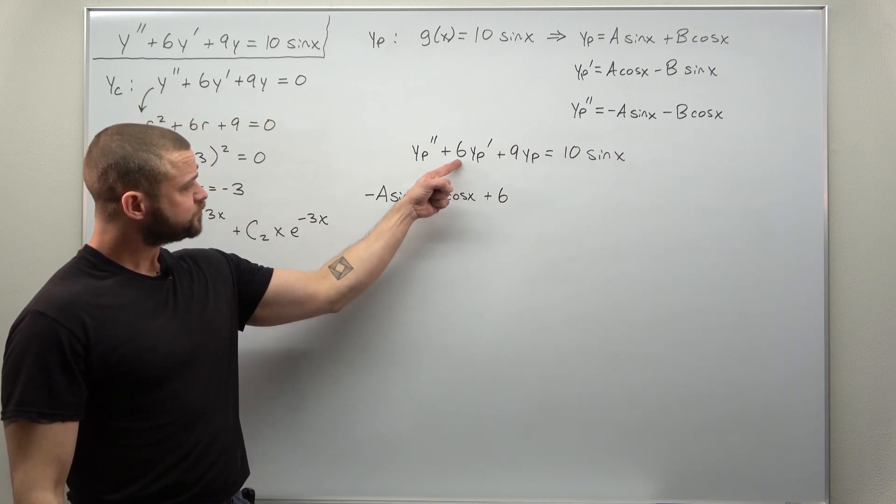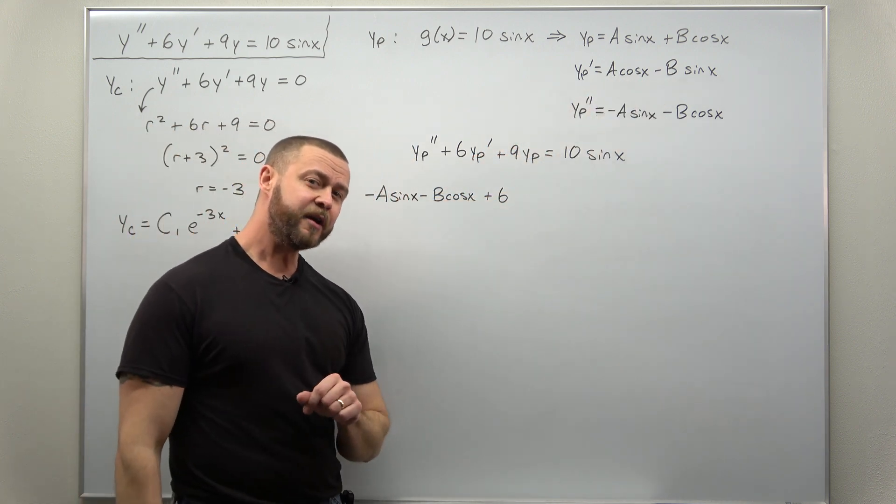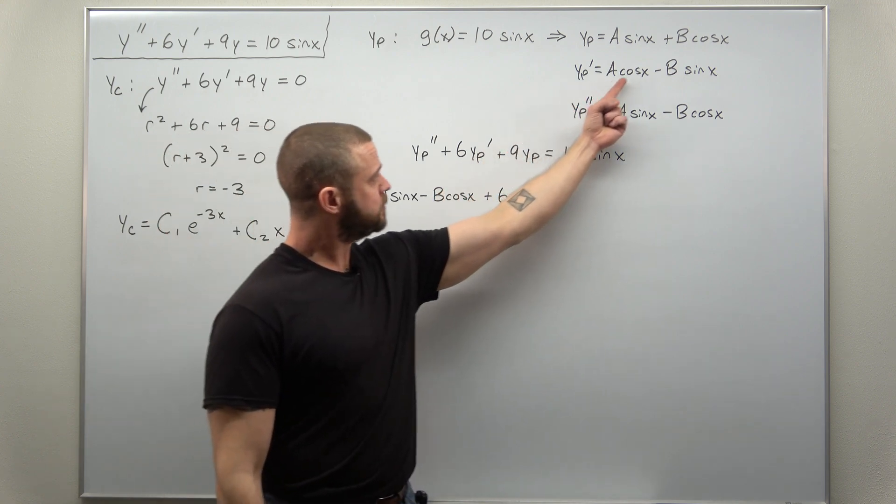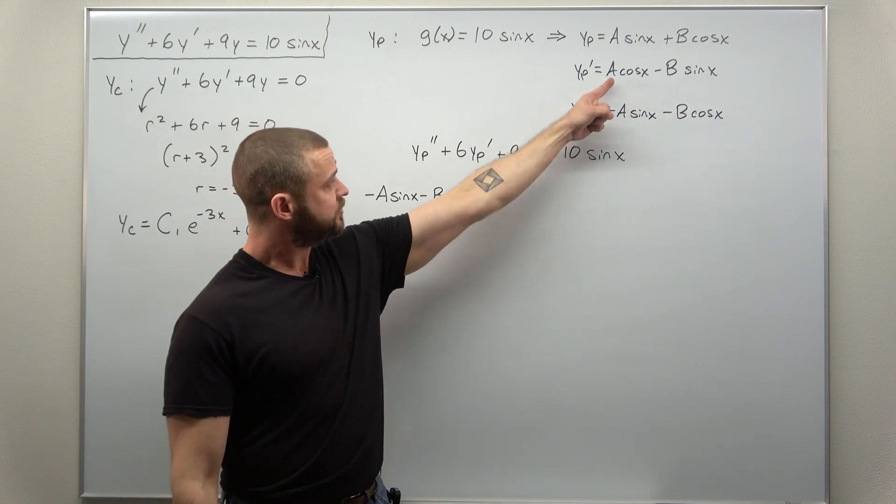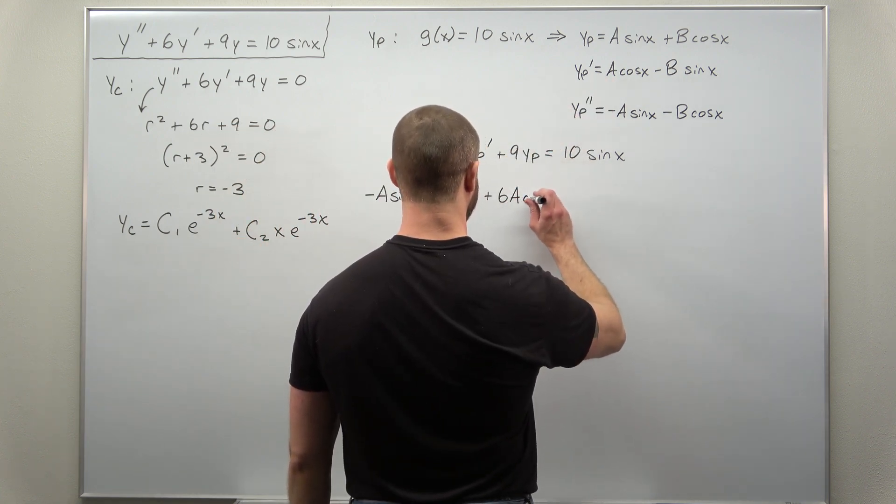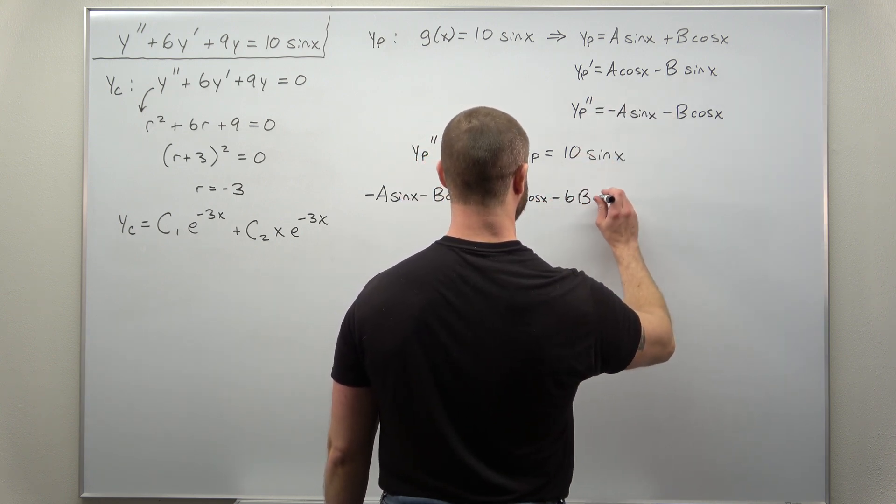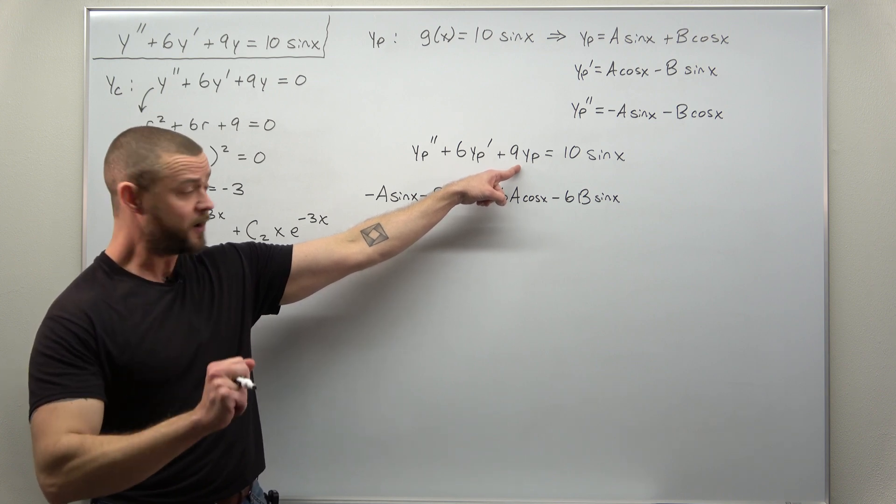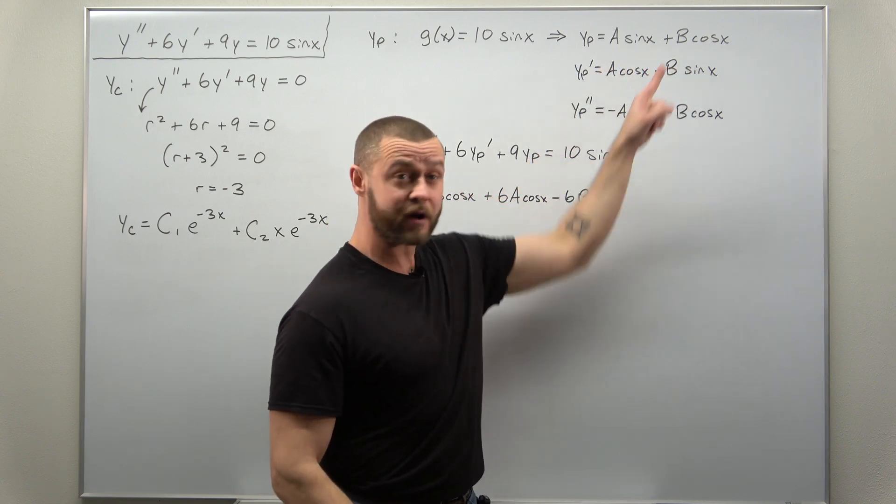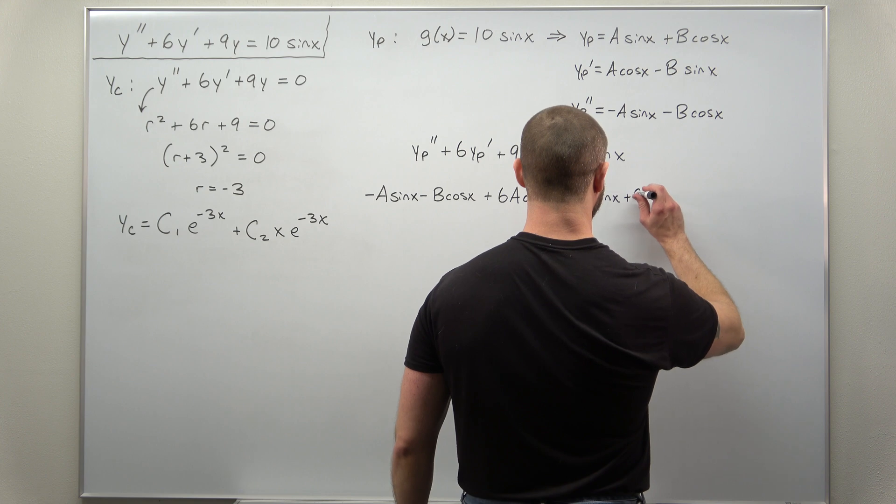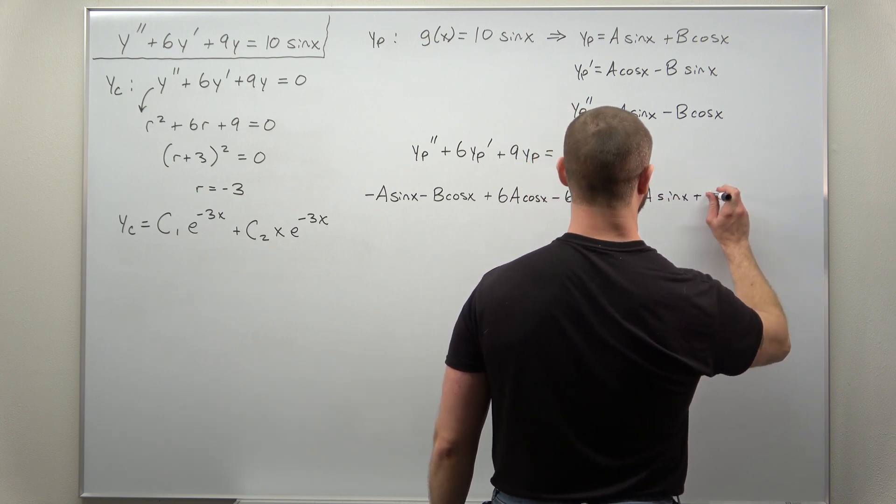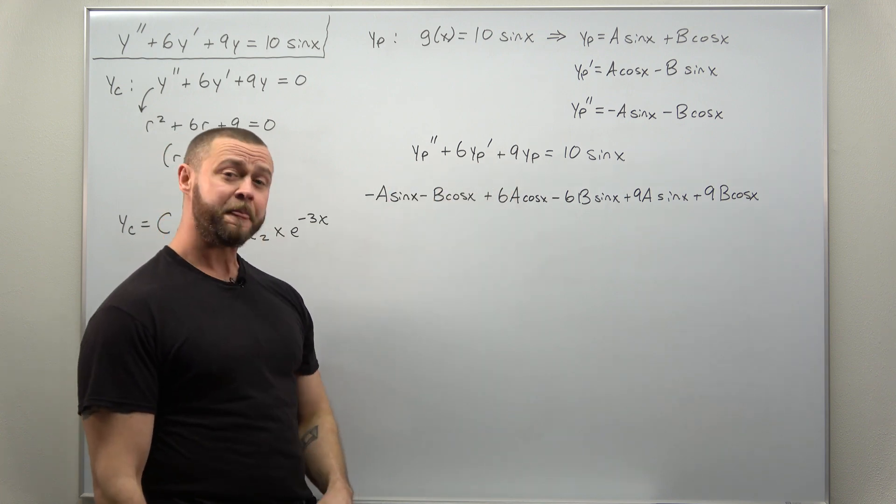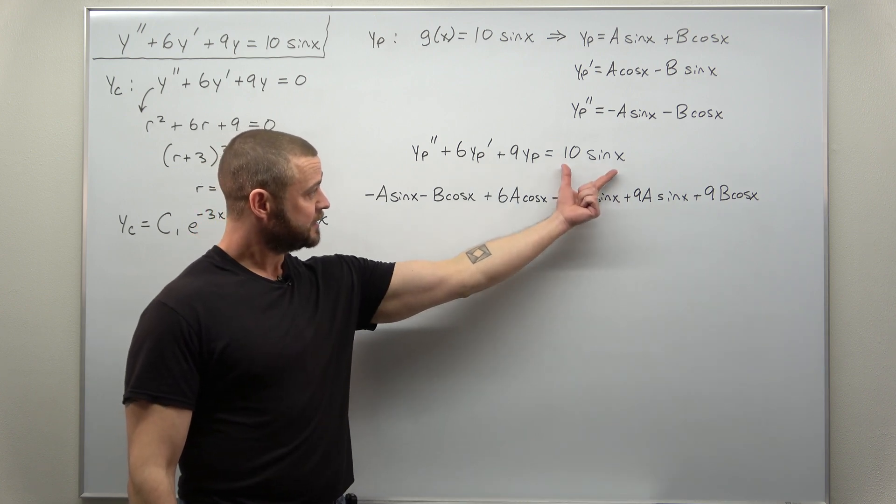This six multiplies y p prime. You're probably okay as a differential equations student doing a little bit of algebra as you go. So the six in front, let's multiply it to each of those terms in y p prime. We'll have six a cosine of x and minus six b sine of x. We plug in for y p, just the function by itself, but multiplied by nine. So nine a sine of x plus nine b cosine of x. That's everything on the left side. And we want that to equal on the right side, 10 sine of x.